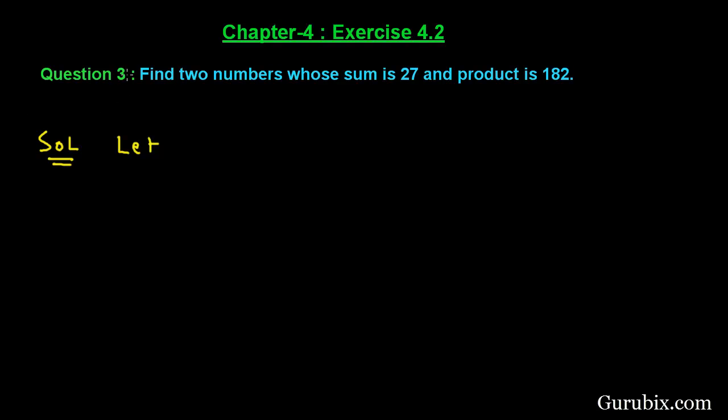Let us solve question number 3 of exercise 4.2 of chapter 4. The question says find two numbers whose sum is 27 and the product is 182. Let us see how to solve it.